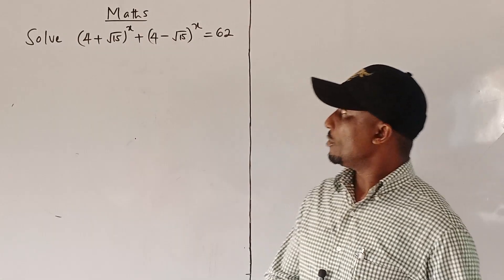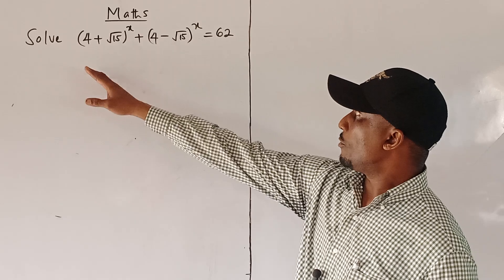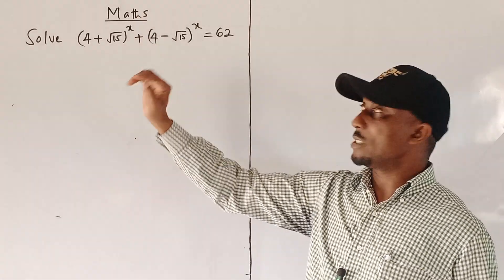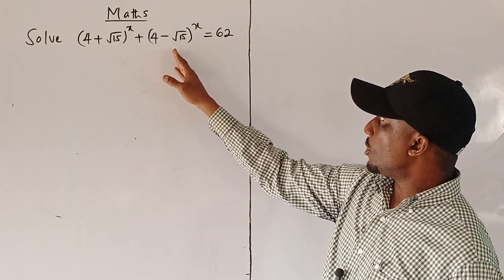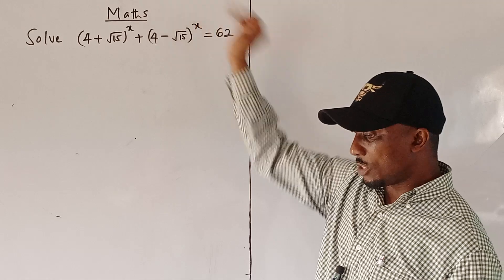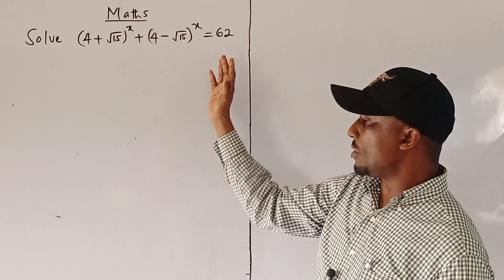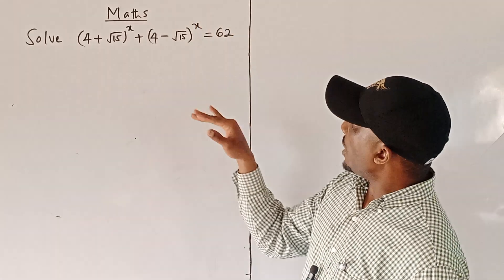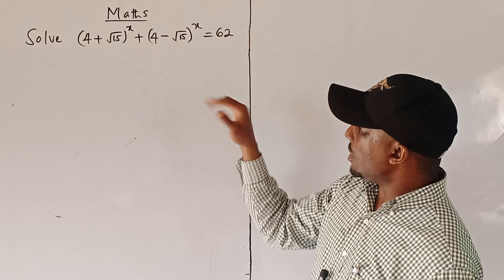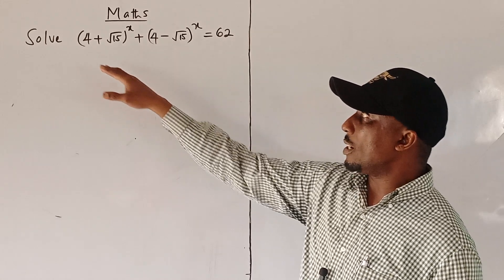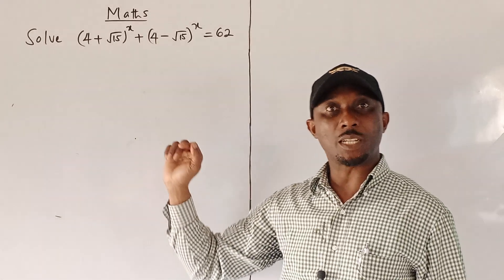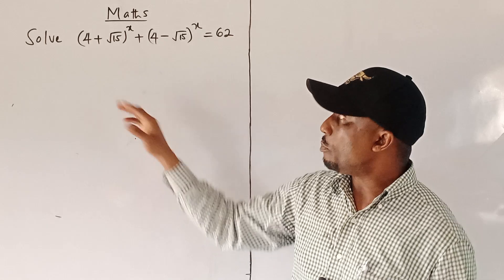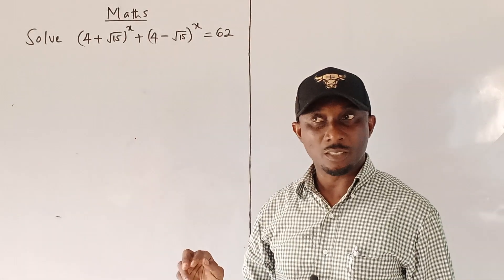We have to solve (4 + √15)^x plus (4 − √15)^x equals 62. If you look at this problem critically, you will see that this is not the regular exponential equation we are used to, because of the radical bases.